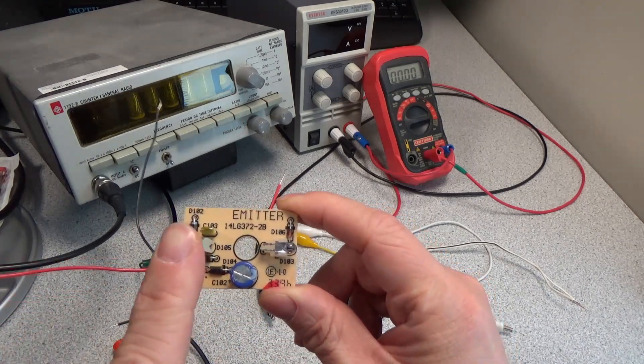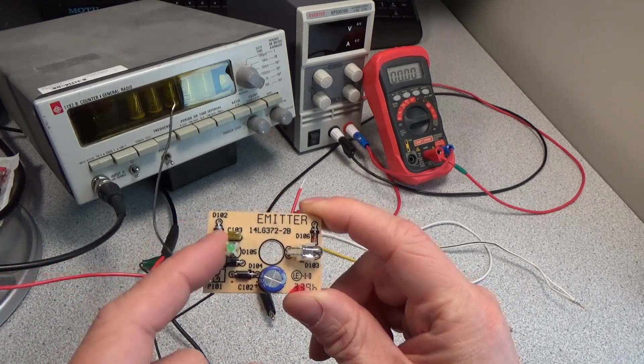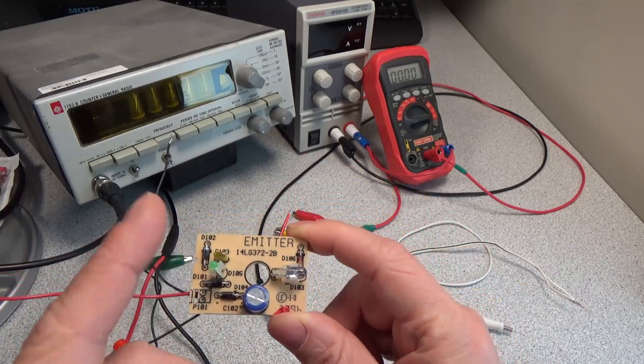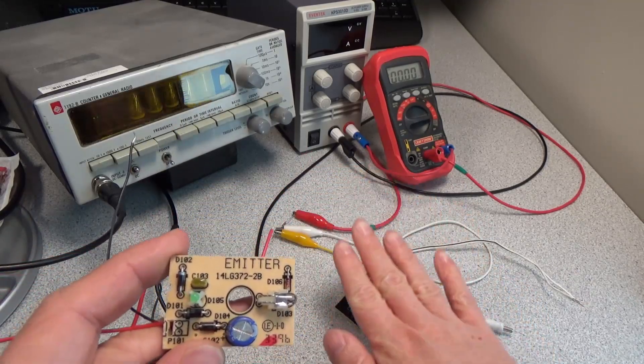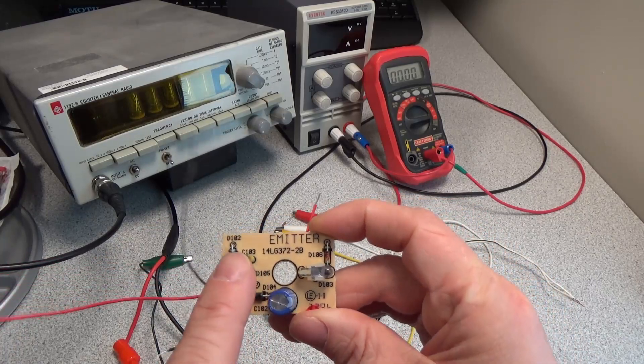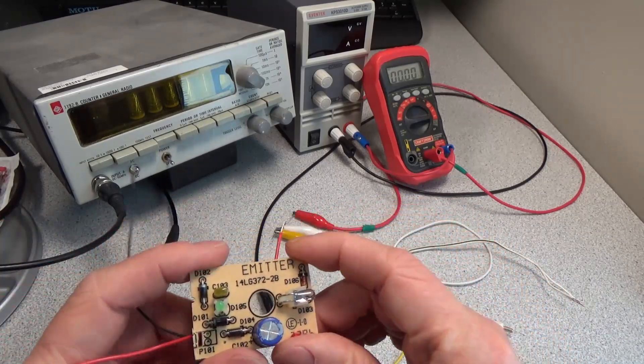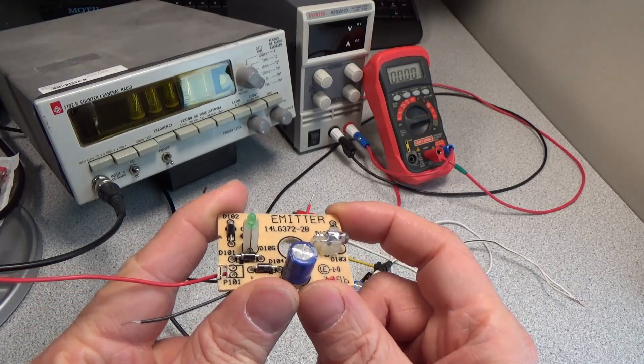This LED will always stay on. When you connect the emitter, that light should come on right away, whether or not the other device is present. If you don't see that green light, then your emitter is not getting power and not working.